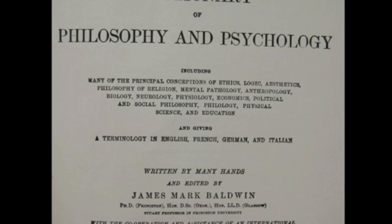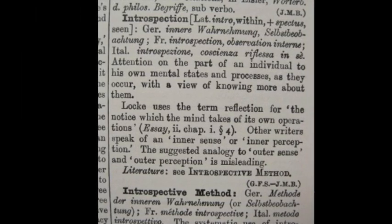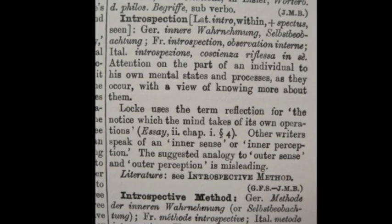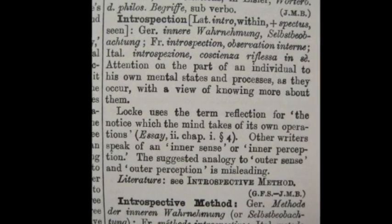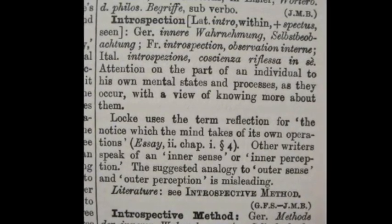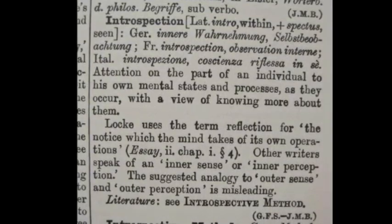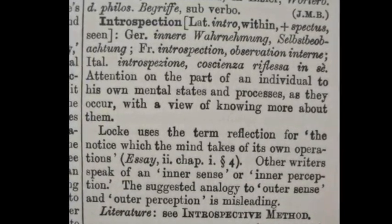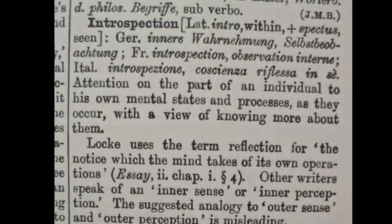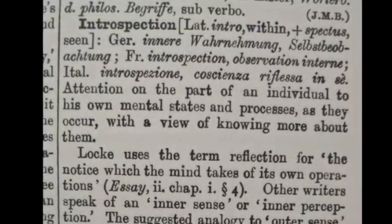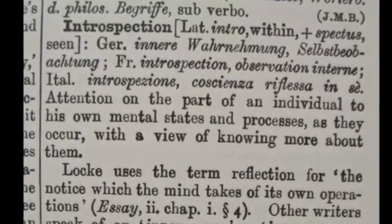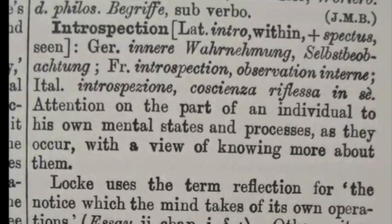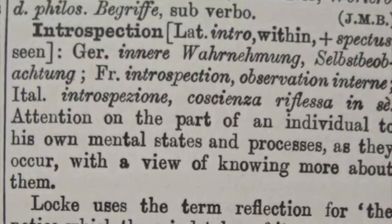Introspection is one of those terms from psychology's history that is difficult to define. James Mark Baldwin's 1901 Dictionary of Philosophy and Psychology defined it as attention on the part of an individual to his own mental states and processes as they occur with a view of knowing more about them. Perhaps a simplistic summary would be that introspection is the observation of consciousness as a means of seeing the mind. But a single definition poses a problem because introspection was defined and used by different psychologists in different ways. This short film will briefly introduce two of these ways.